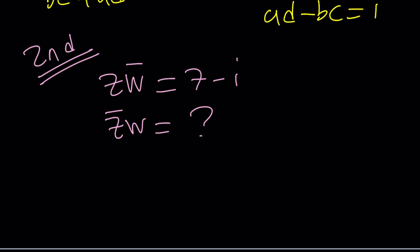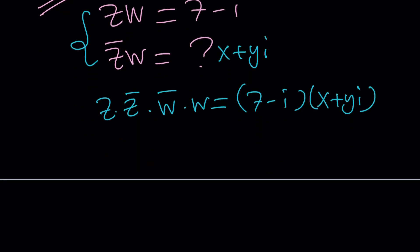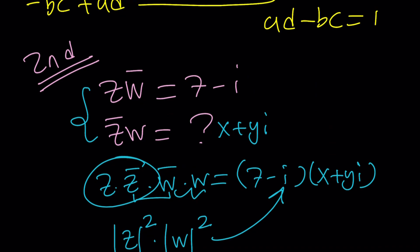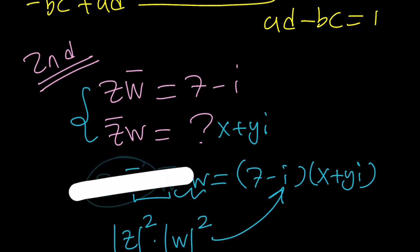There's a really nice property, which I want to talk about. But before that, let's see if we can find an alternative method—could I just multiply these together? You can probably call this x plus yi, and multiply Z times Z bar times W bar times W equals 7 minus i times x plus yi. This is going to be a real number—the absolute value of Z squared, and the absolute value of W squared. But I don't think you're going to be able to get the answer from here. Let me tell you the property before too long.